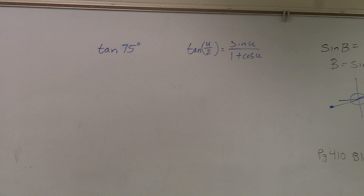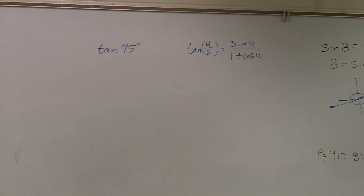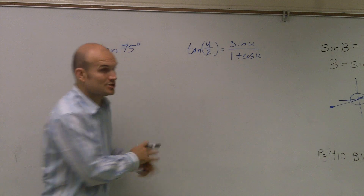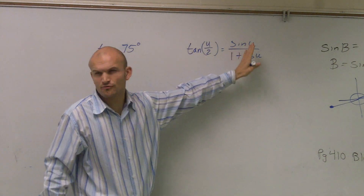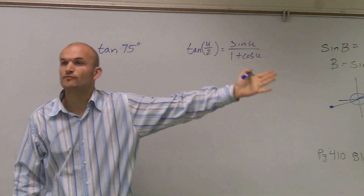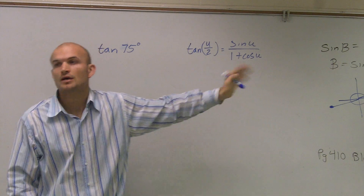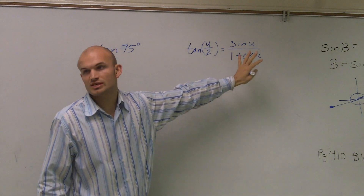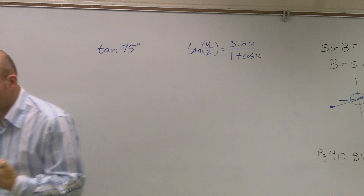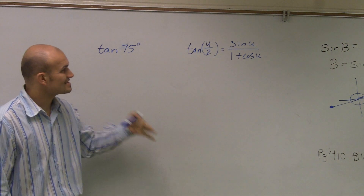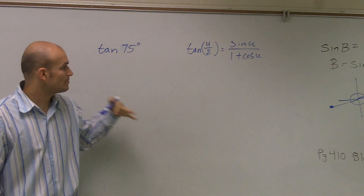So let's take a look at this one. The formula says tangent of u divided by 2 — so whatever your angle is, divided by 2 equals this formula. I just picked tangent, and there are two different formulas that we use. But I'm just going to use this one for this case. So it says tangent of u divided by 2 equals sine of u over 1 plus cosine.